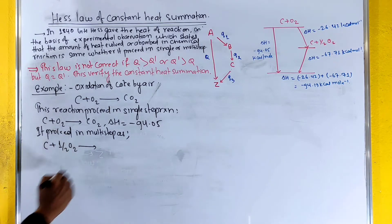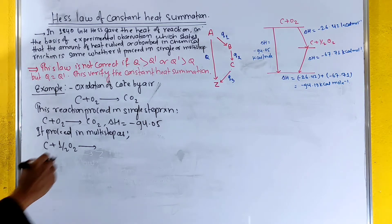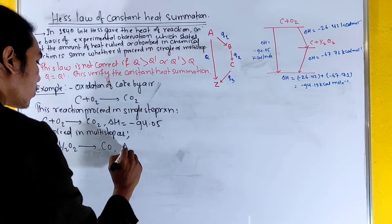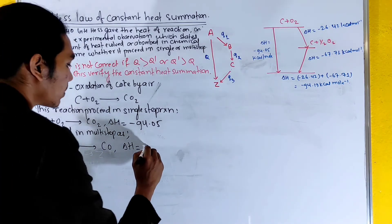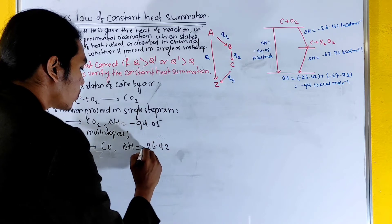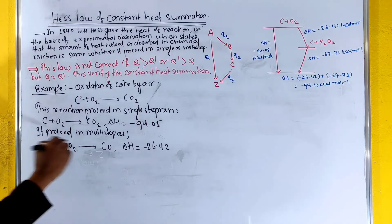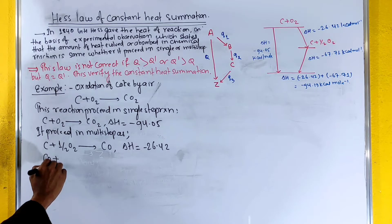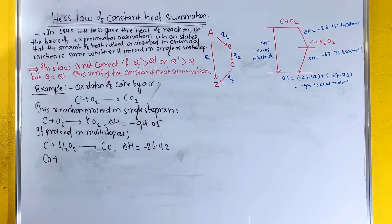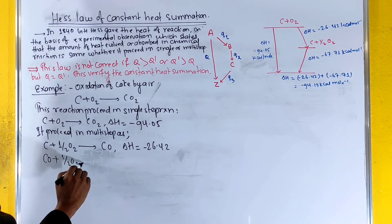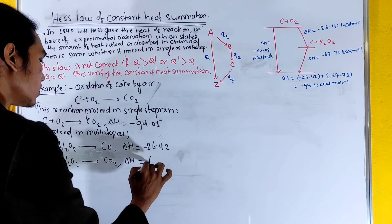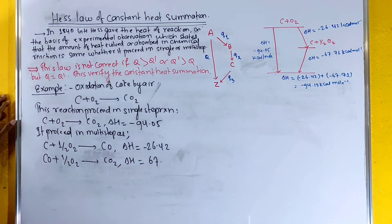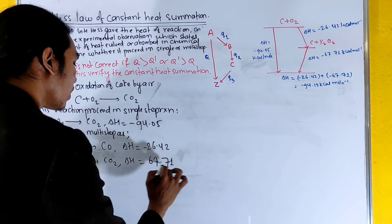Second case: carbon monoxide formation — carbon plus half O₂ gives carbon monoxide, delta H equals minus 26.42 kJ. Then carbon monoxide plus half O₂ gives carbon dioxide, delta H equals minus 67.71 kJ.